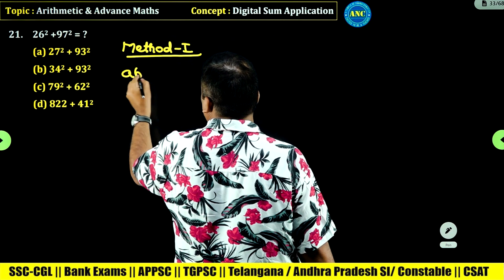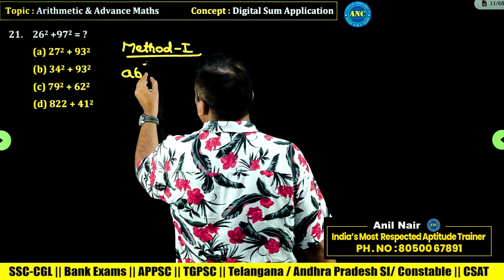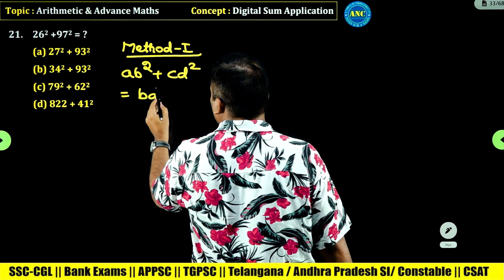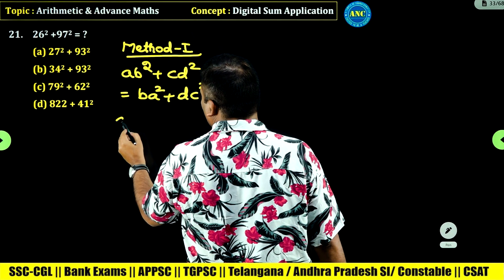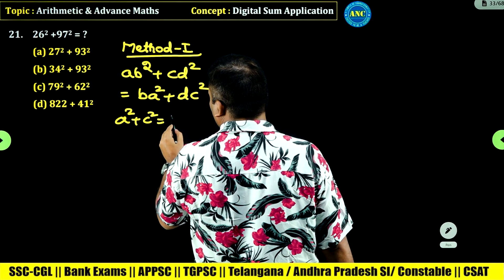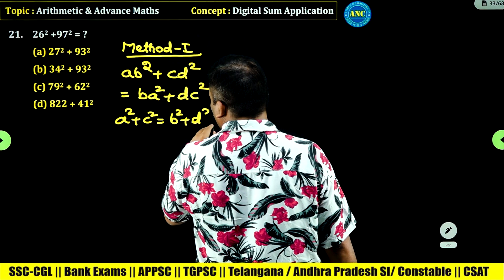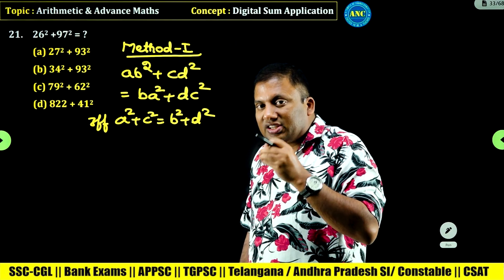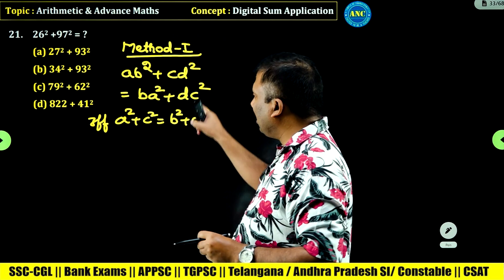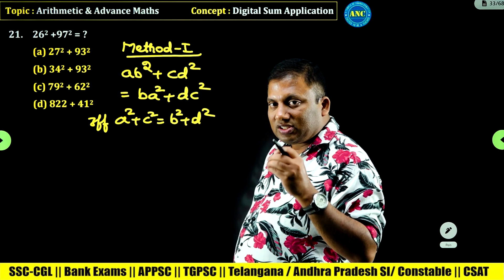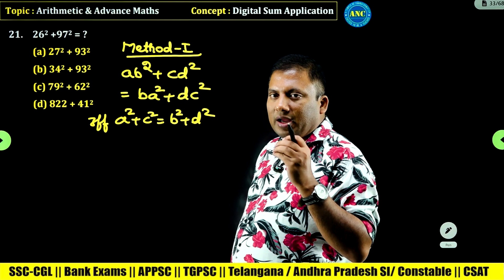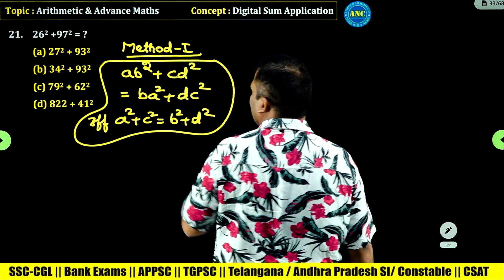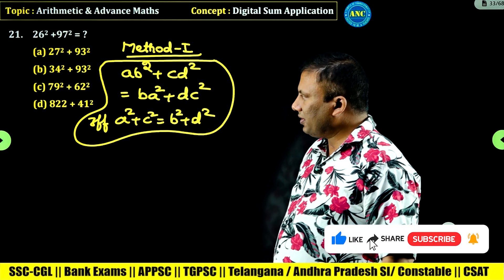The concept is: if there is a two-digit number AB, then AB square plus CD square is equivalent to the reverse — BA square plus DC square — when A square plus C square is equivalent to B square plus D square. That is, the tens digit squares sum equals the units digit squares sum. If this condition is true, then AB square plus CD square is equivalent to BA square plus DC square.